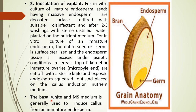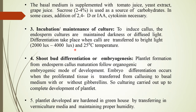Basal White or MS medium is generally used to induce callus formation from immature endosperm. The basal medium is supplemented with tomato juice, yeast extract, and grape juice; sucrose is used as a carbon source. In some cases, addition of 2,4-D, IAA, and cytokinin is necessary. To induce callus, the endosperm culture is maintained in darkness or diffused light.